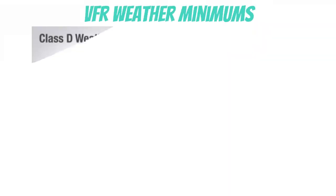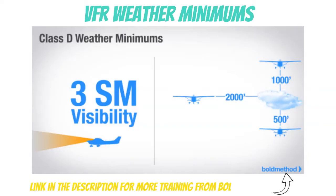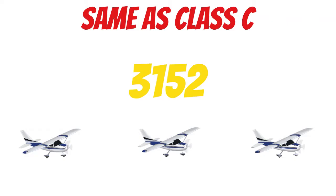Let's take a quick look at the VFR weather minimums for Class Delta airspace. This is the worst weather we can have and still fly VFR in this airspace. We need at least three statute miles of visibility, and we need to stay away from the clouds — at least 500 feet below, 2,000 feet from the sides, and 1,000 feet from the tops. This is the exact same weather minimums as Class C airspace. Don't forget the memory aid: 3-1-5-2, or three Cessna 152s.